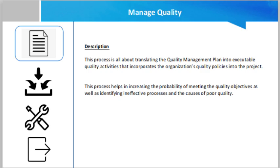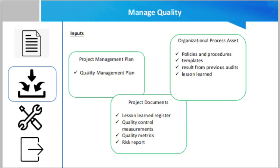Now talking about the inputs for this process: the first input is the Project Management Plan. The component of the project management plan that is an input for this process is the Quality Management Plan, which is the output of the Plan Quality Management process. In the Quality Management Plan, you find a description of the acceptable levels of project and product quality, how to ensure this level of quality in the deliverables and processes, and what to do with non-conforming products, including what corrective actions to implement.